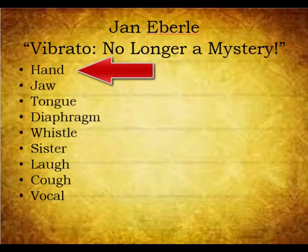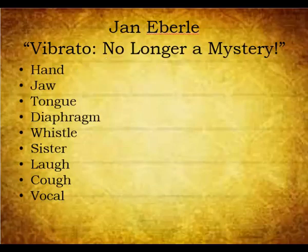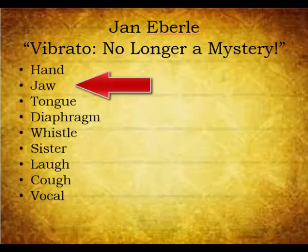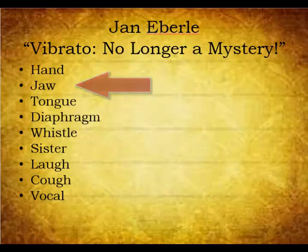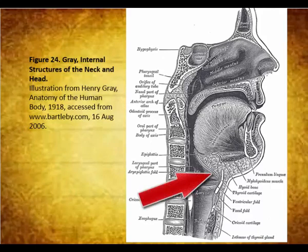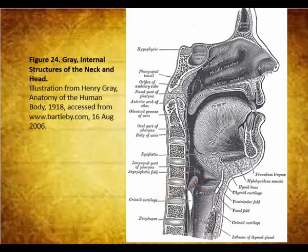Hand vibrato indicates shaking the instrument in order to create vibrato. This is a technique employed by many trumpet performers; however, it is not recommended for double reed players. Jaw vibrato requires the movement of the mandible — moving the jaw in rapid chewing motions will alter the tone with vibrato. This vibrato is employed by several bassoonists; however, it produces a wide variation in the pitch of notes. I do not recommend this vibrato.